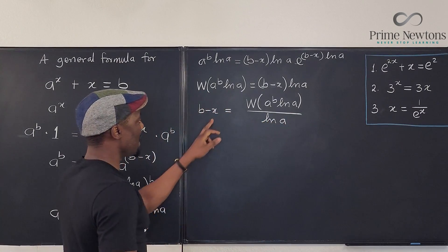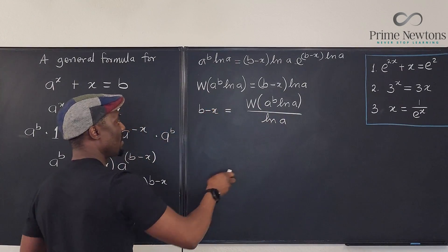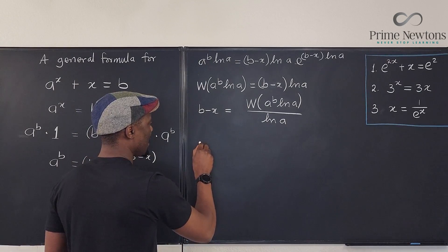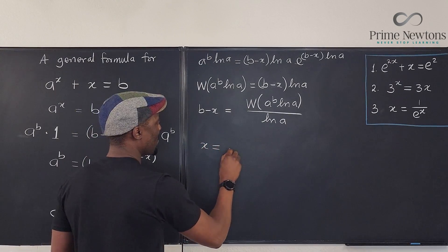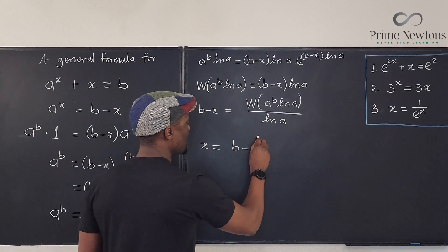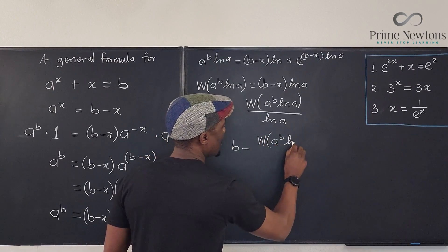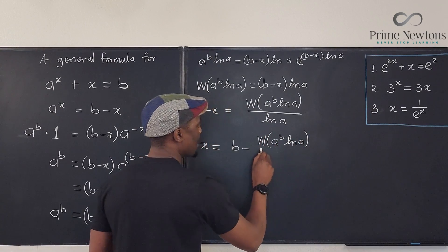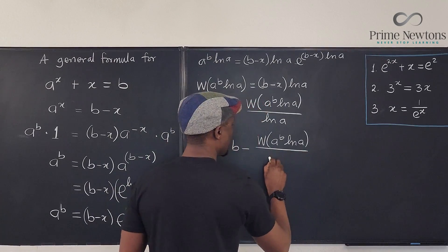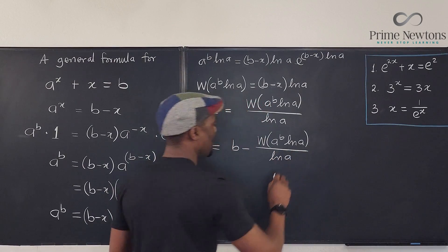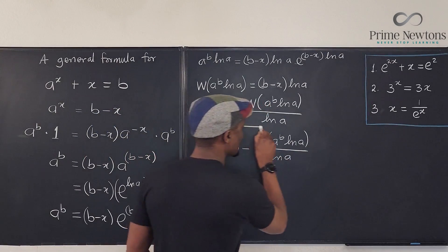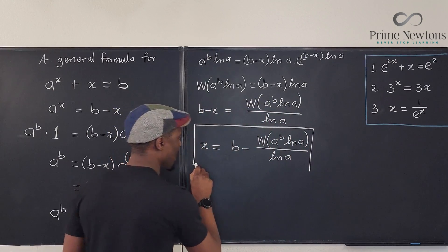And if we want to get x, if we move x over here and bring this here, we end up with this formula that says x is equal to b minus the w of a raised to power b natural log of a divided by the natural log of a. This is the general formula for what we are doing.